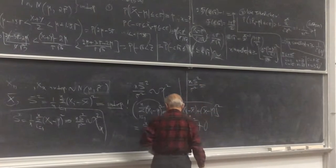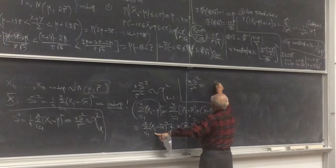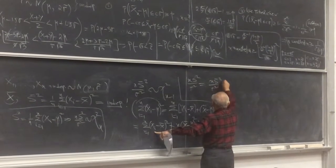Divide by sigma squared. So it is this thing here, n times s-bar squared over sigma squared.